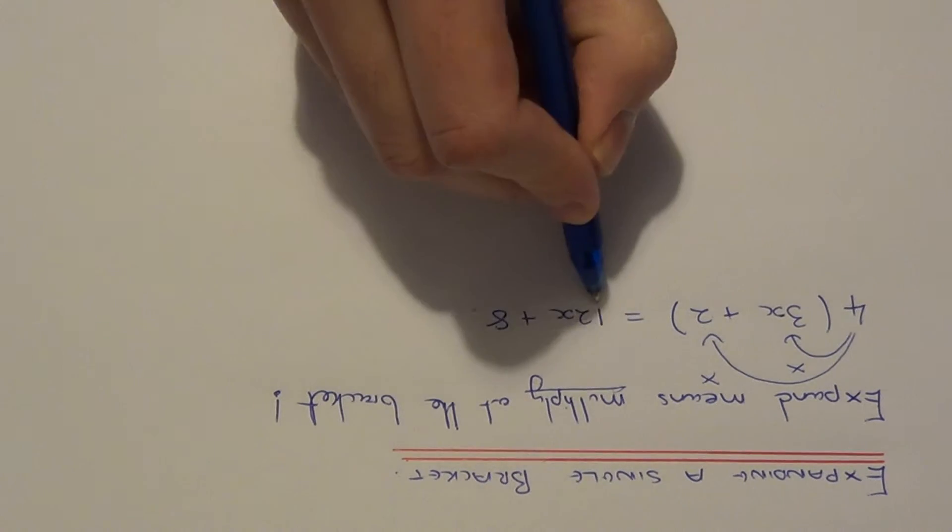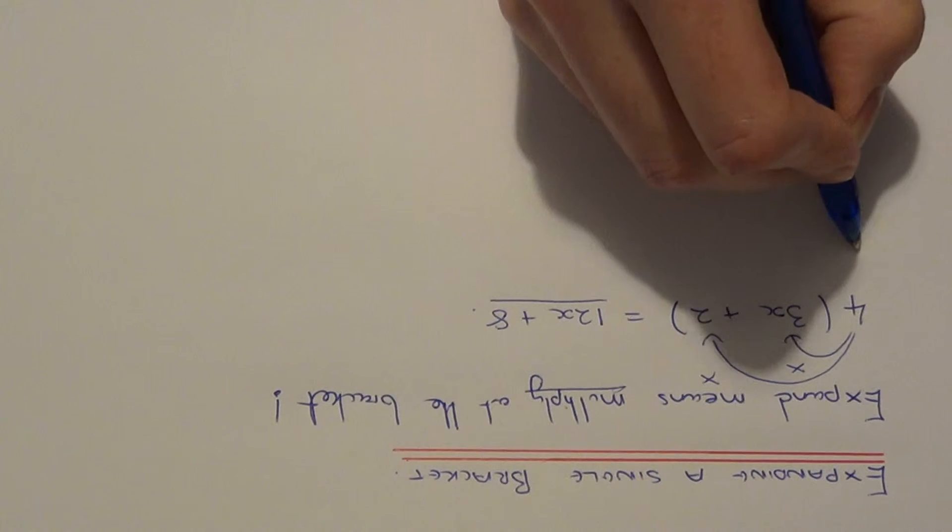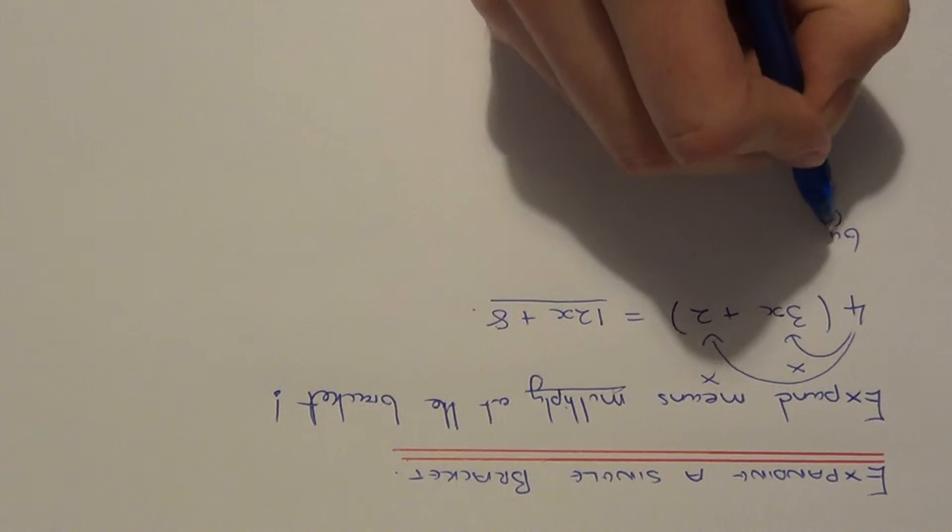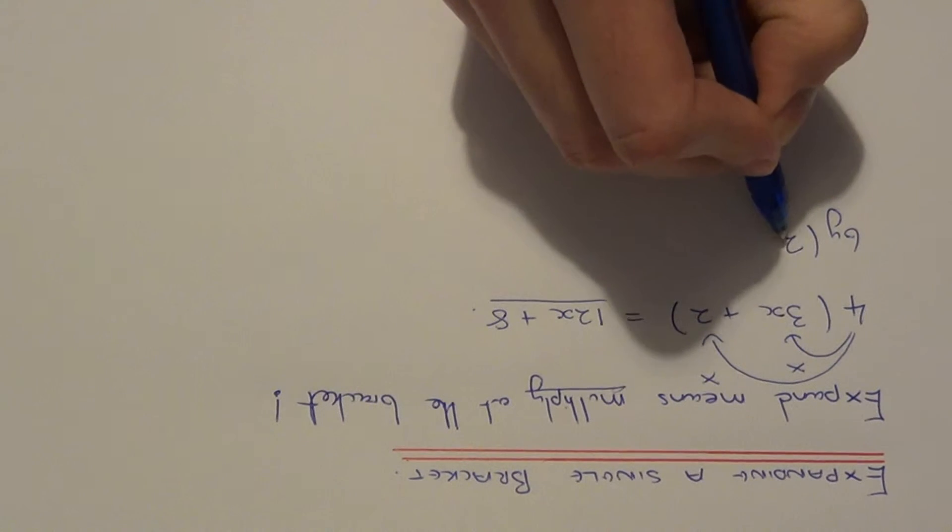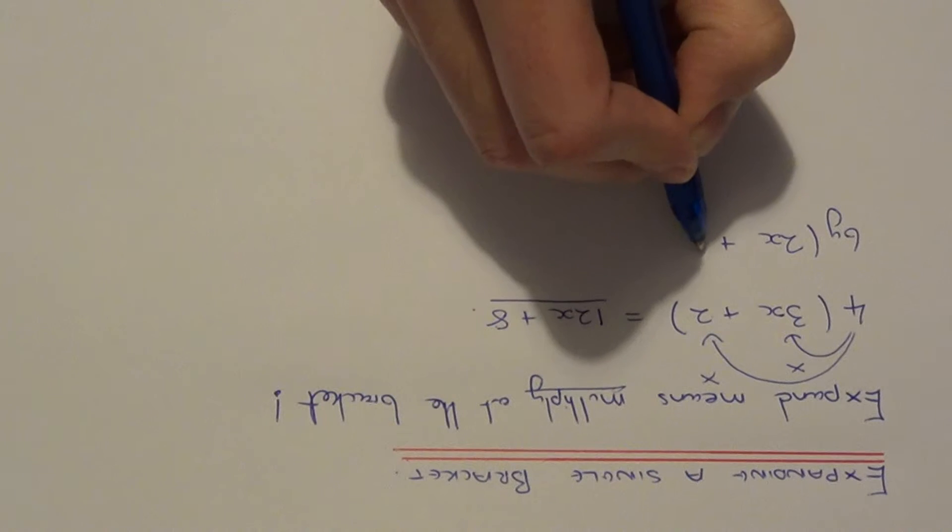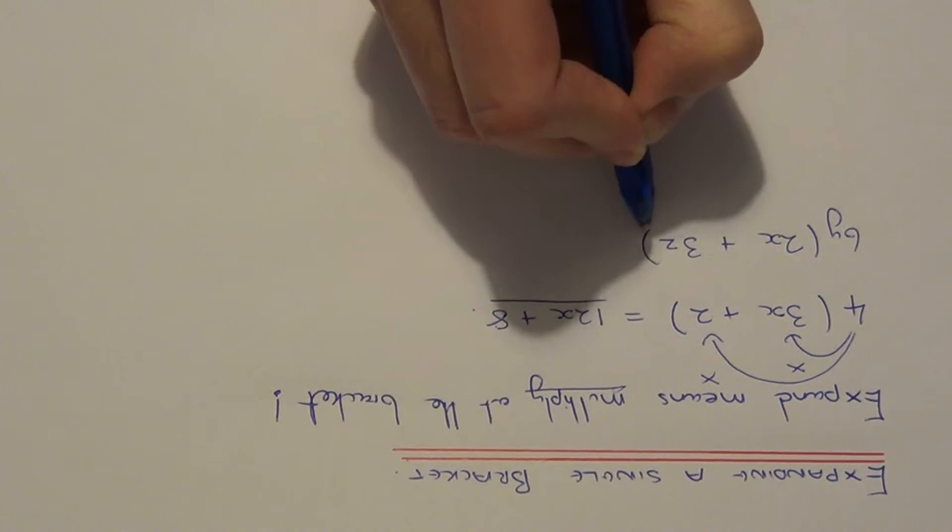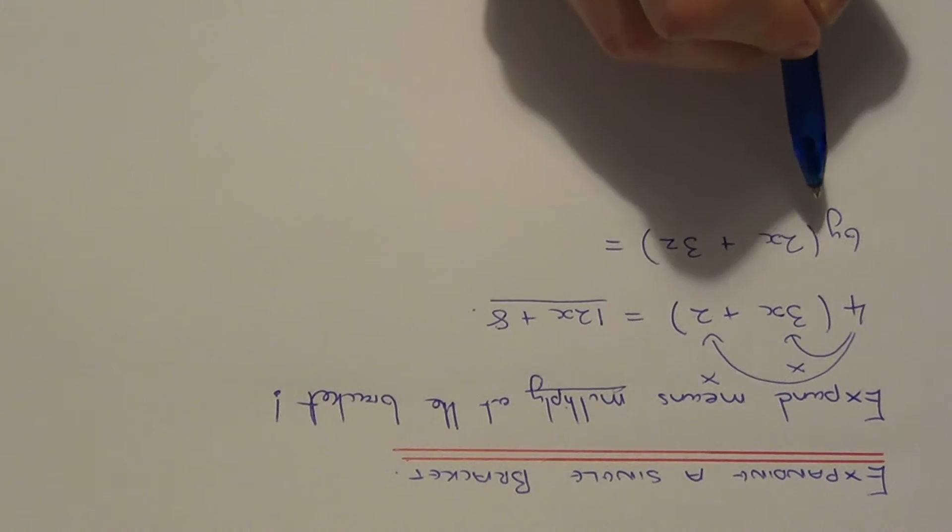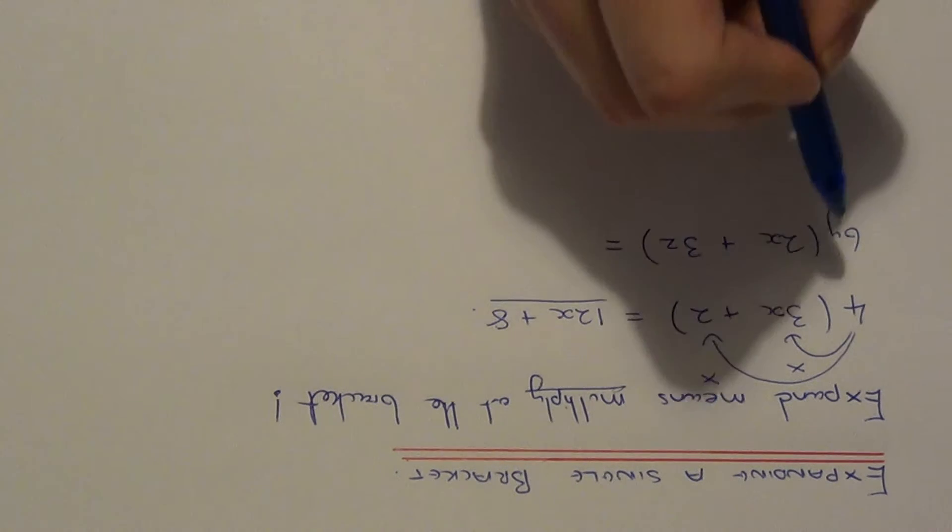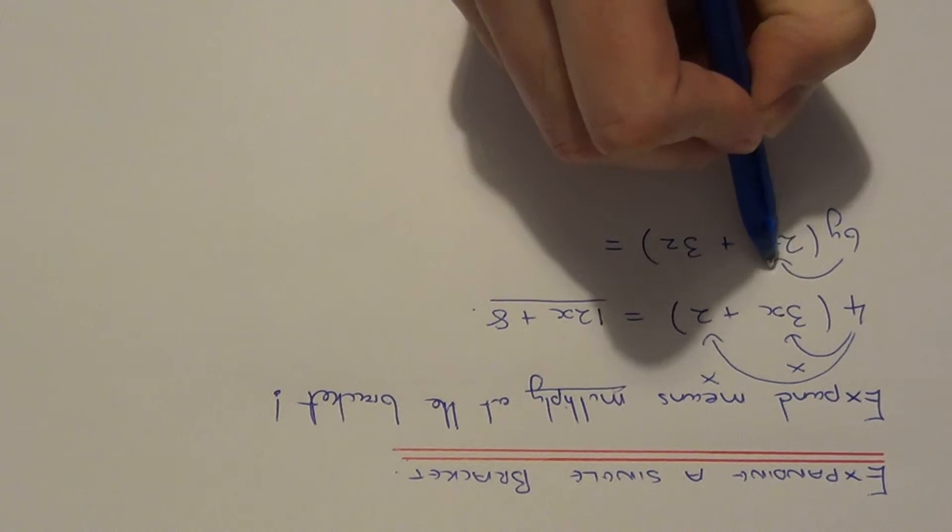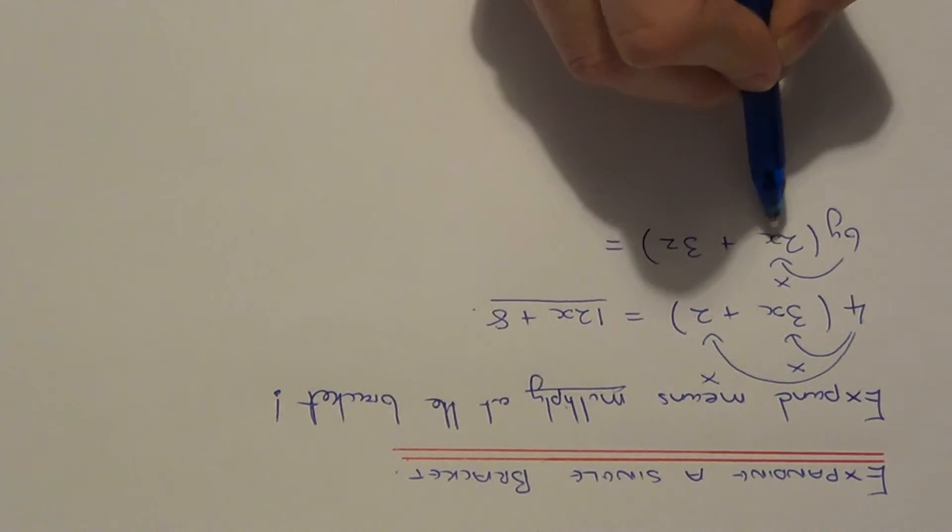And that is your final answer. Let me do another example. So this time we've got to expand 6y bracket 2x plus 3z. So again the 6y has to multiply both terms inside the bracket. So first of all we'll do 6y times 2x.